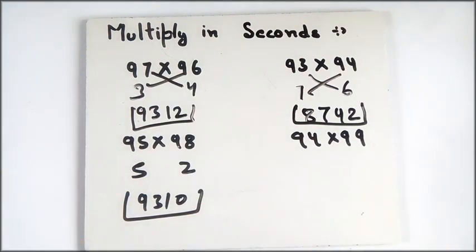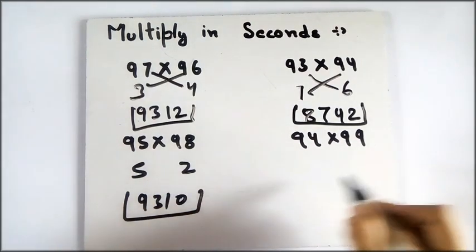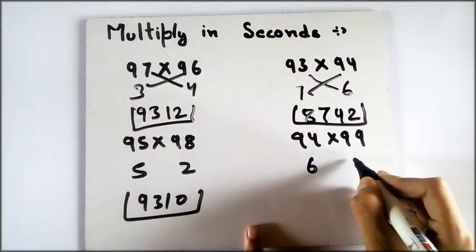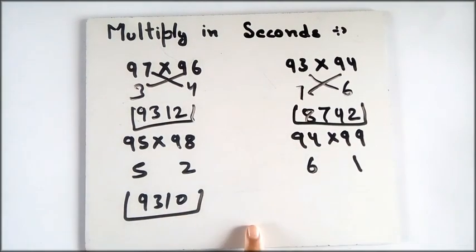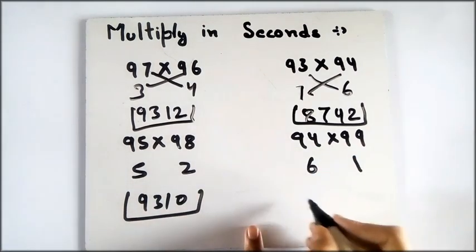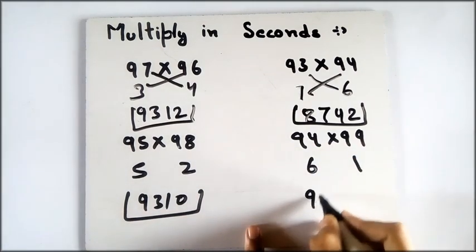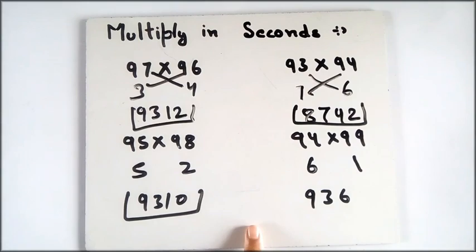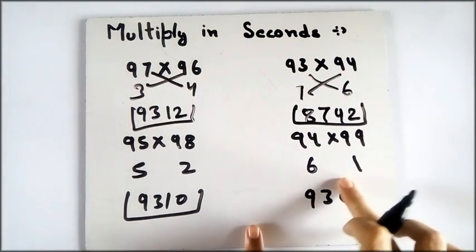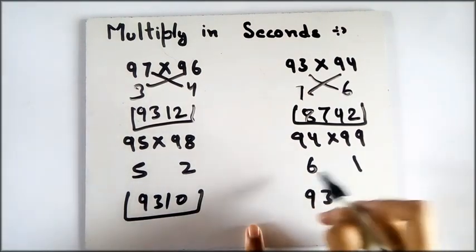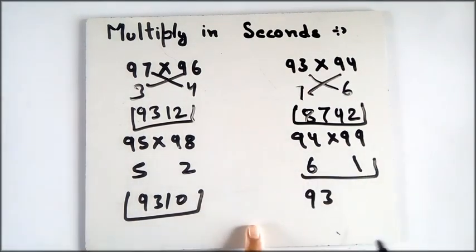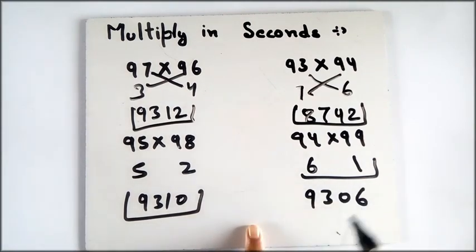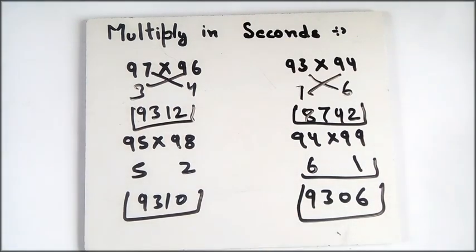See how fast we can calculate. Now this one is a little different. It is 6 less than 100 and it is 1 less than 100. I will subtract this one from this — I get 93, and 6 times 1 is 6. We have to write 6 here, but this is not our final answer. When a one's digit number comes here, you have to add a 0 and then write that number. So this is our answer.